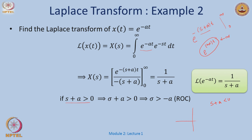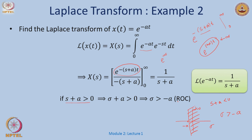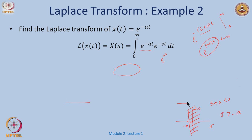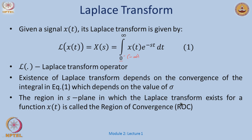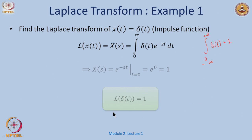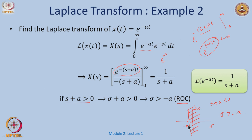If I draw this on the S-plane with axes σ and jω, calling the boundary σ = −a, the Laplace transform of e^(−at) = 1/(S+a) exists only for σ > −a. For all other values, the limit does not exist — that is the notion of region of convergence.